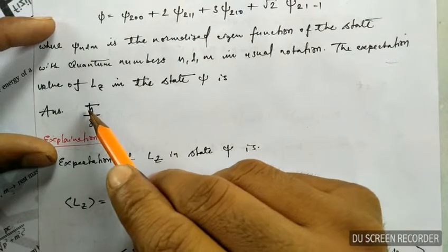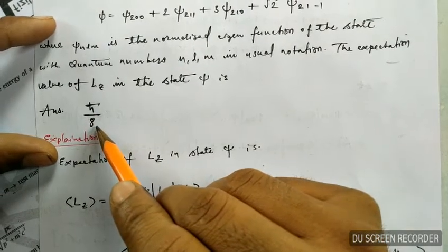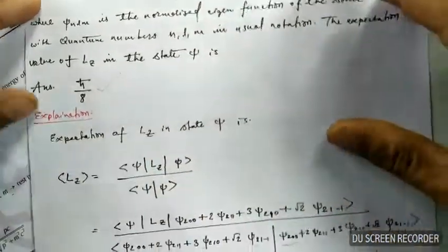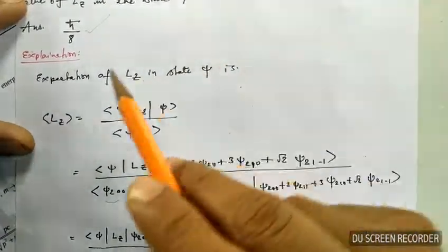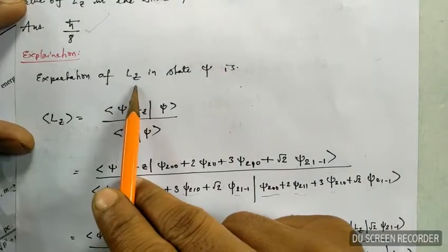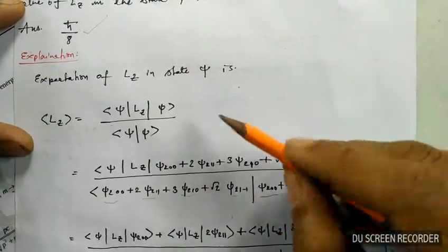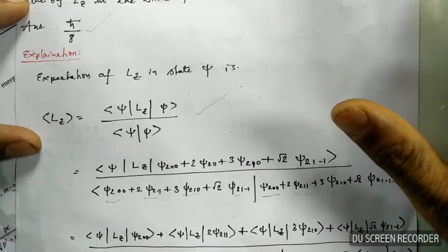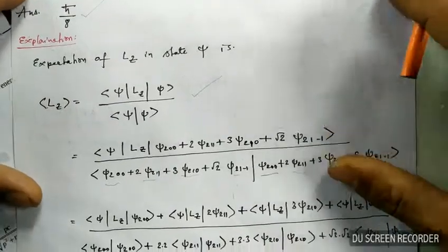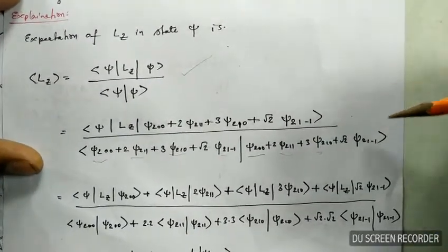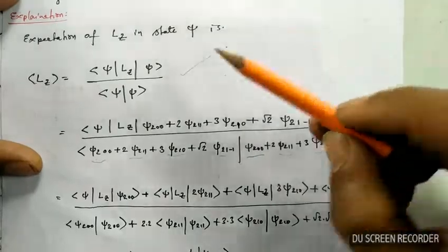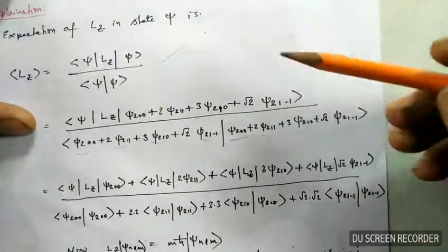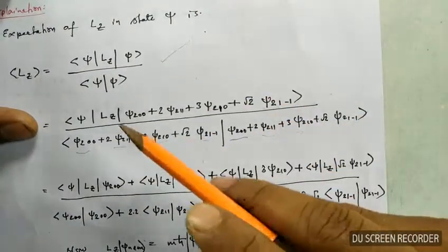The answer is H-naught upon some value, and let's see how we can arrive at this answer. The expectation of L_Z in the state psi is given by a standard equation — just remember this equation. In this equation I have substituted the value of psi from the question.